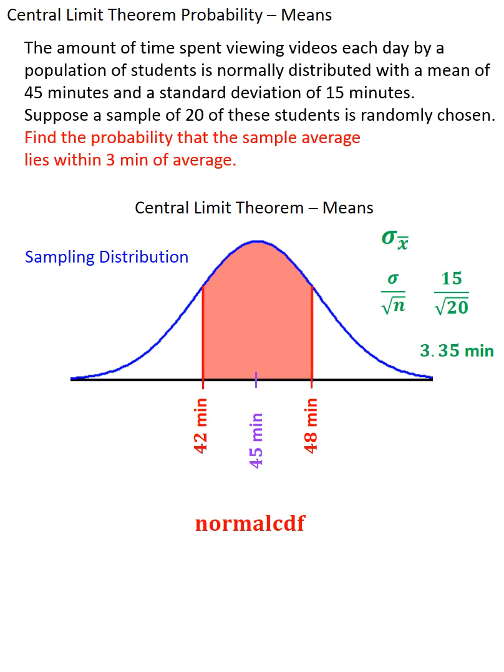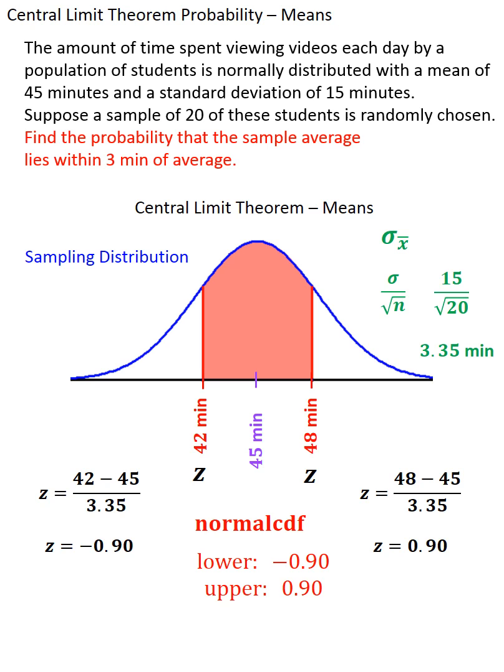Once again, this would depend on your calculator or application or other software you're using, but generally speaking, I like to compute z-scores for the lower and upper limits of my shaded area. Using the normal formula for z-scores, I can plug those as my lower and upper limits into my normal cumulative distribution function.